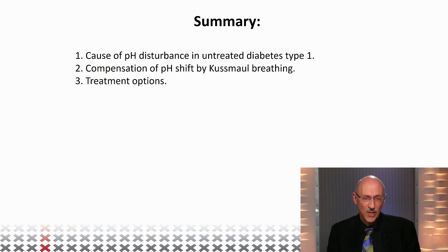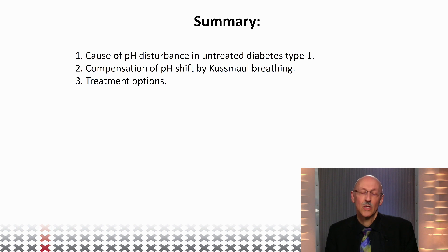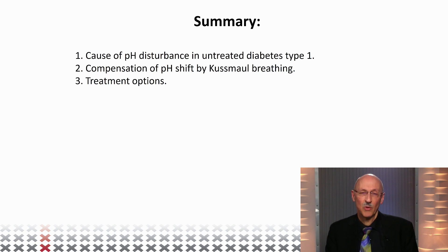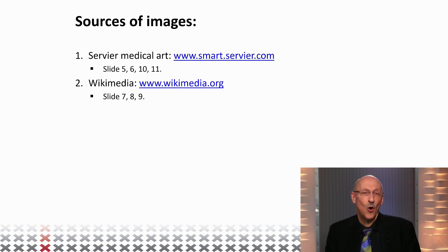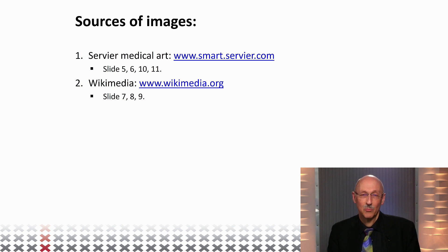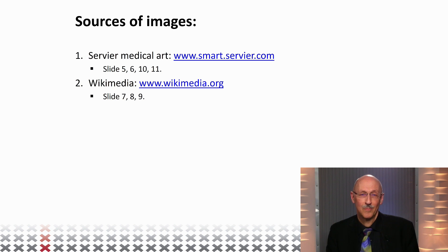In summary, we saw a metabolic imbalance, we saw the body trying to counteract the effects on blood pH through Kussmaul breathing, and we briefly discussed the treatment options. I hope you are still interested in all kinds of imbalances, because we are going to talk about alkalosis in lecture 3 next. Thank you.